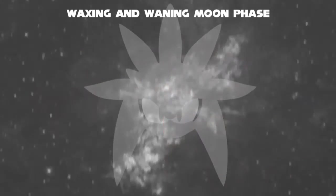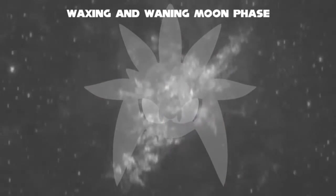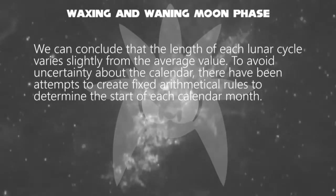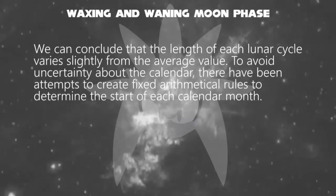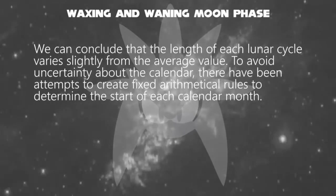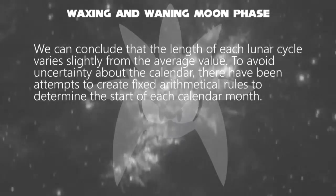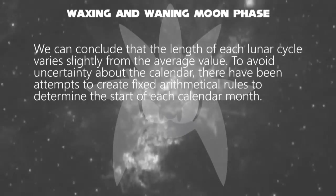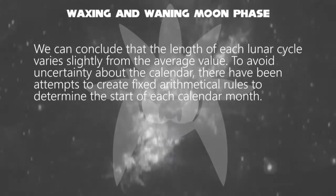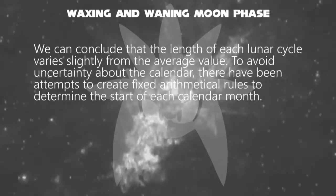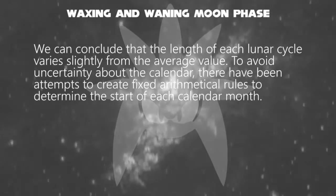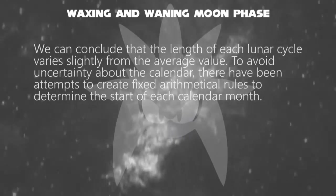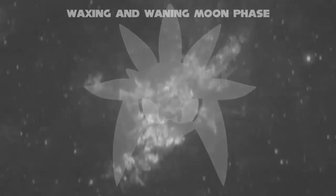We can conclude that the length of each lunar cycle varies slightly from the average value. To avoid uncertainty about the calendar, there have been attempts to create fixed arithmetical rules to determine the start of each calendar month. So now you know about waxing and waning moon phases.